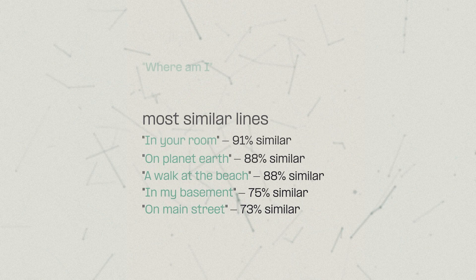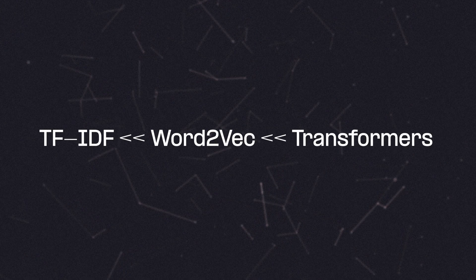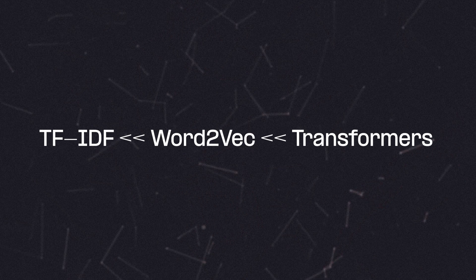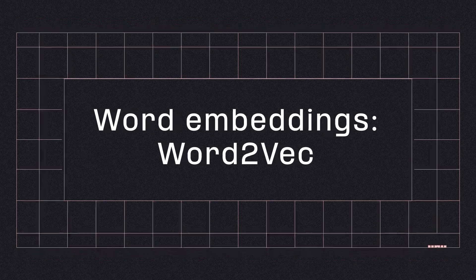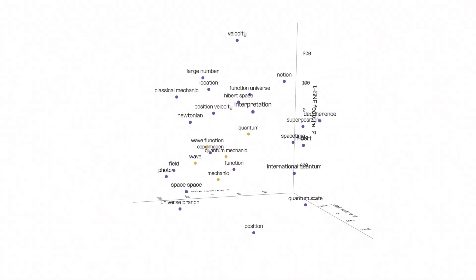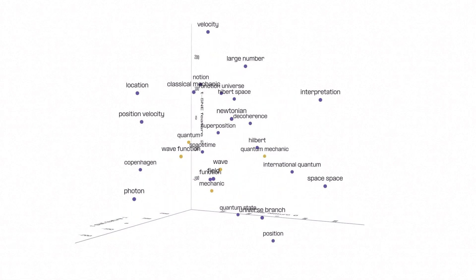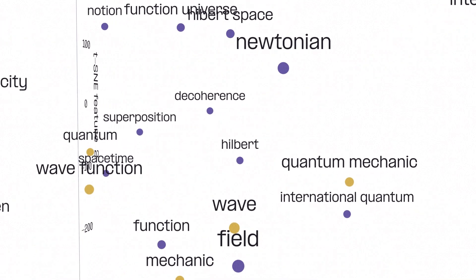A word embedding is a way to convert language into meaningful numbers such that the nuances and complexity can be understood by a computer. Some of these embedding methods are better than others, and one of the milestones in this field of language understanding is called Word2Vec. Word2Vec is an embedding method that uses millions, if not billions, of words to learn how to place them in a high-dimensional space, such that the arrangement of words encodes important relationships.